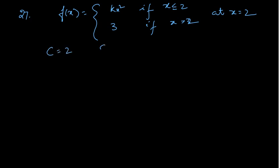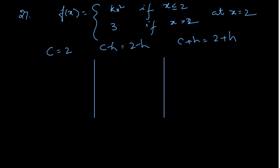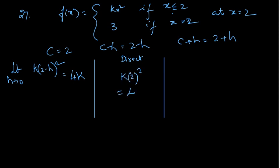c minus h is 2 minus h, c plus h is 2 plus h. LHL: limit h tends to 0 of k·(2 minus h)² — when h tends to 0, you get 4k. Direct value with x equals 2: k·(2²) equals 4k. RHL: limit h tends to 0 with 2 plus h goes to the other piece, giving value 3. So equating: 4k equals 4k equals 3, which gives k equals 3/4.